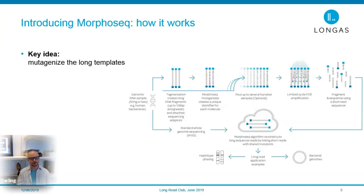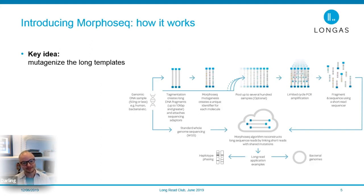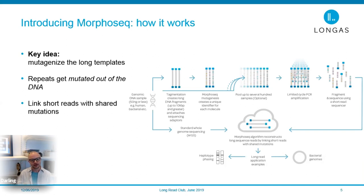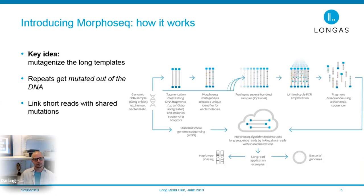So what is MorphoSeq? MorphoSeq is a technology that allows you to generate long virtual reads from a short read sequencer. The key idea that makes MorphoSeq work is that we mutagenize the long templates. This may sound crazy because most people want their sequences to be more accurate, not less. But if you mutagenize the sequences, the repeats get mutated, and short reads from the same mutated template will have a common mutation pattern, allowing you to link those short reads and reconstruct long templates.